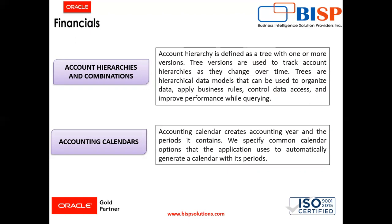Account combinations contain a complete set of segment values that uniquely identifies an account in a chart of accounts. For example, if there is an account combination 1000-200-55 and our segments are company, department, and account, then 1000 will denote the company, 200 will denote the department, and 55 can be a code of any account. This way the combinations can be set, which is termed as the account combinations.